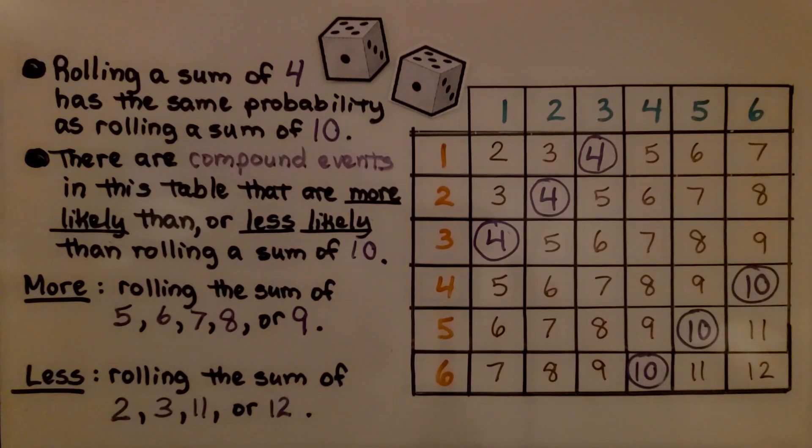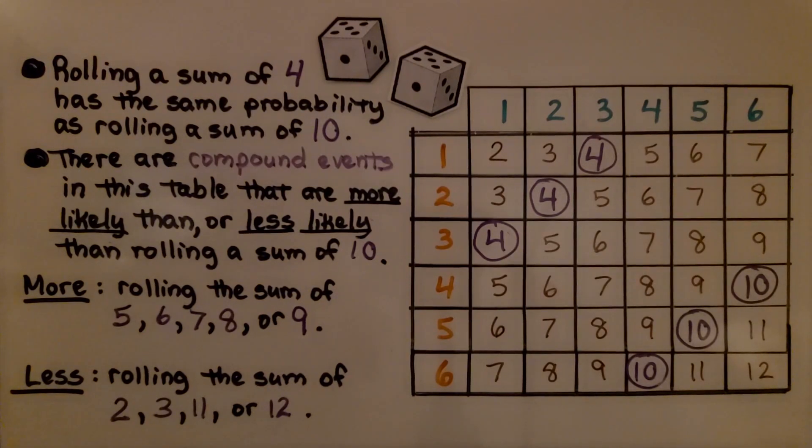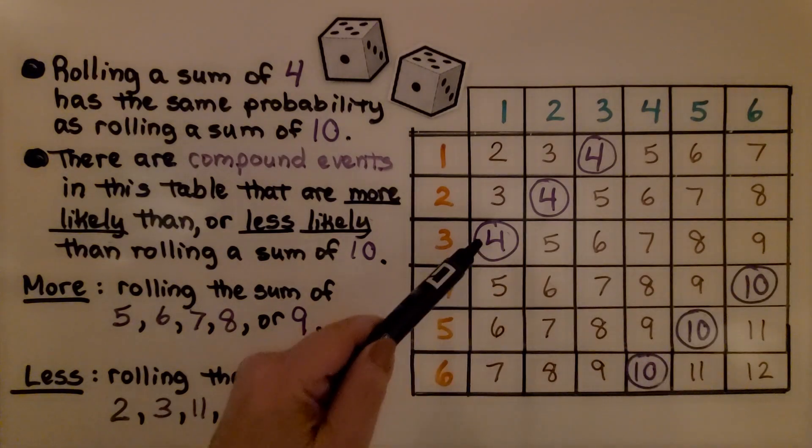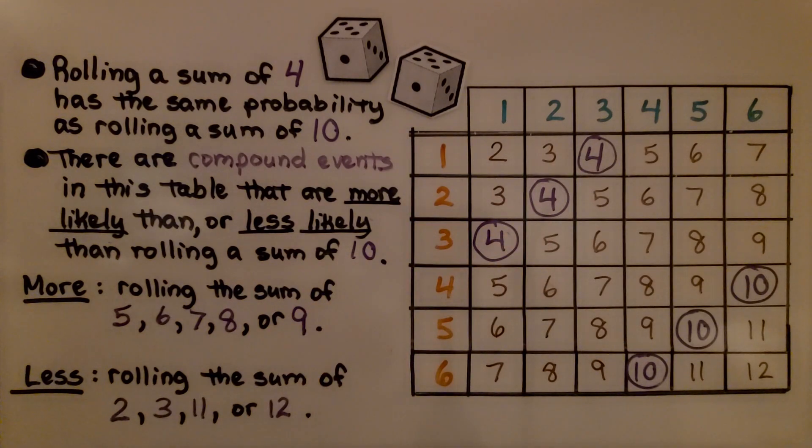Rolling a sum of 4 has the same probability as rolling the sum of 10. We had 3 tens. Look, we have 3 fours. So, the probability is the same.